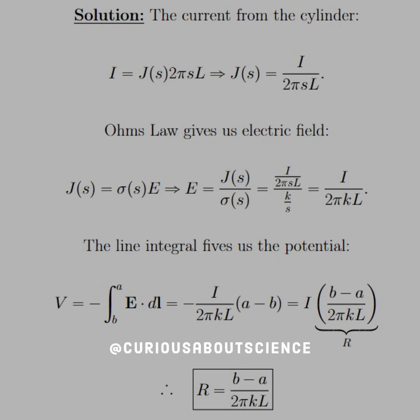Okay, well we know that the current in the cylinder—since we know what J is, the volume density, and we know what the volume of a cylinder is, 2πs times L—so we know what the current is. Solve this for J(s) and we get I over 2πsL.